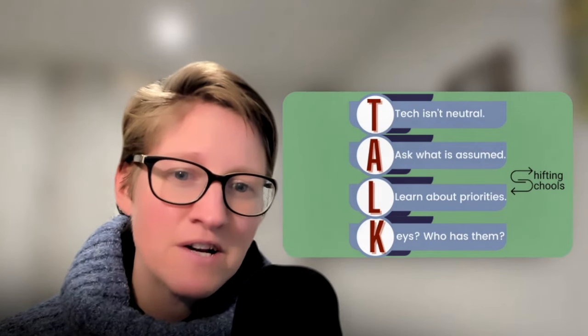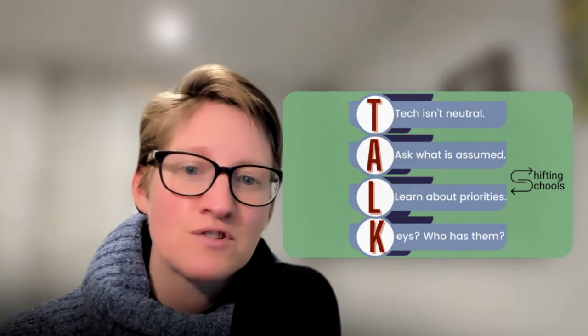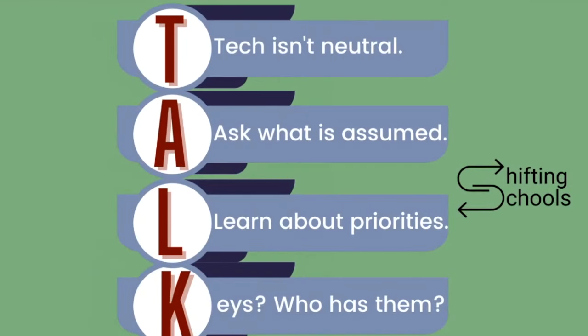That's why we have a ready-to-roll framework. This is our Shifting Schools TALK framework that's going to invite you to think about how tech isn't neutral. We need to ask questions around what's being assumed of us as learners and as users of technology. We're going to think about what it means to learn about the priorities of organizations and companies that rely on AI and shape the way that AI is used.